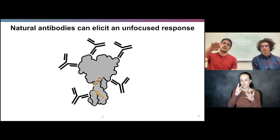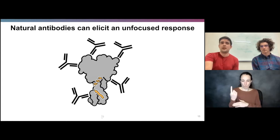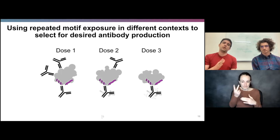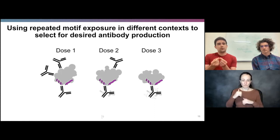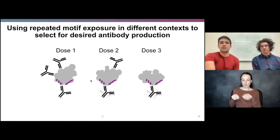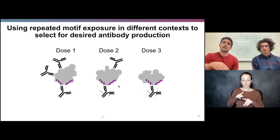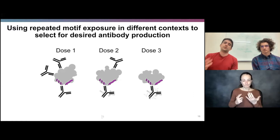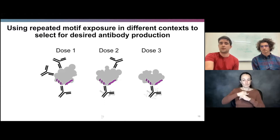The immune system reacts more strongly to epitopes it's seen before. So the idea is that if you present a series of proteins that are all structurally different except that they all retain a common motif, initially you'd get the expected broad immune response. But over time, because the only thing the immune system is repeatedly seeing is this one privileged epitope, you get an increasingly focused immune response over several doses.